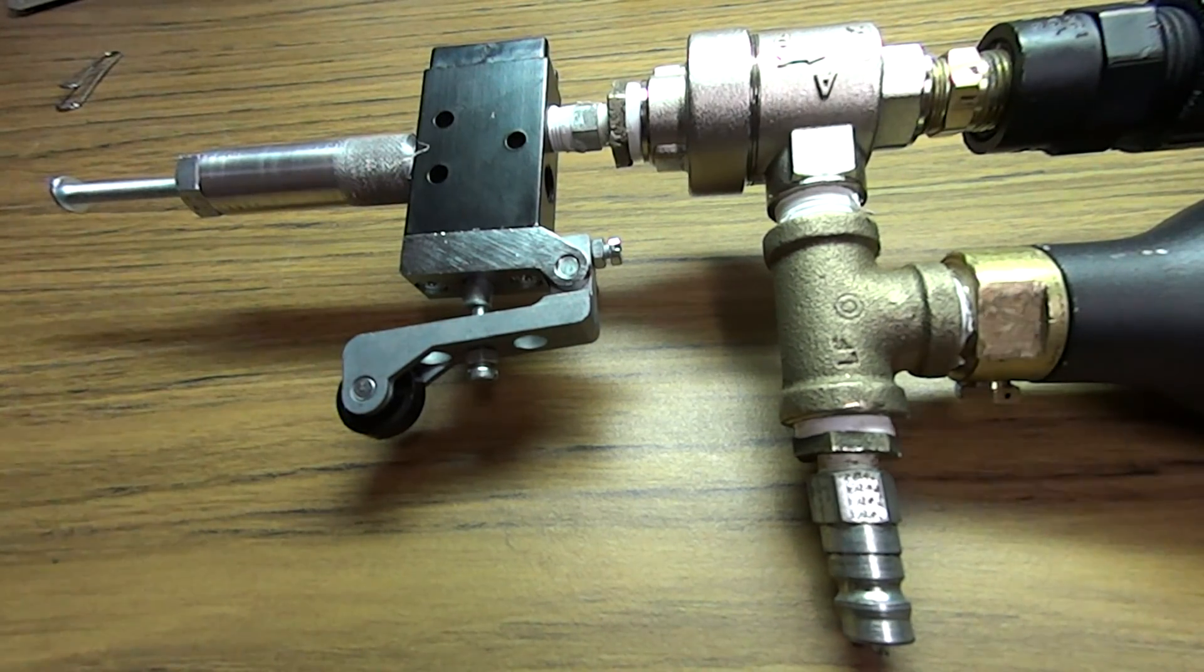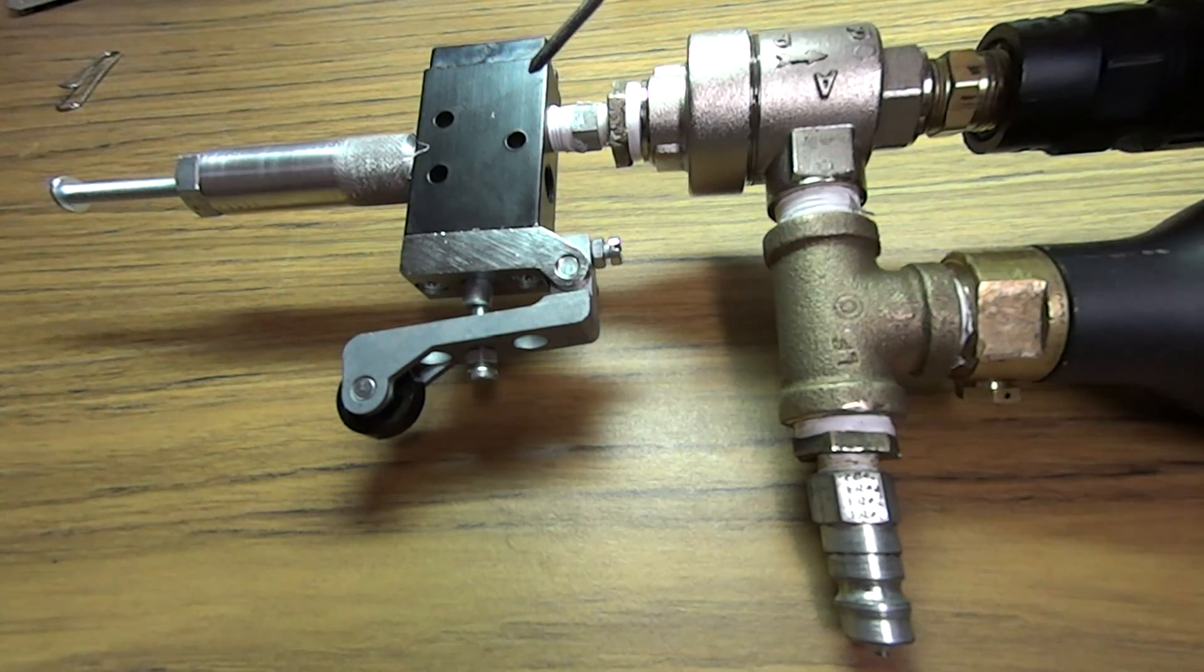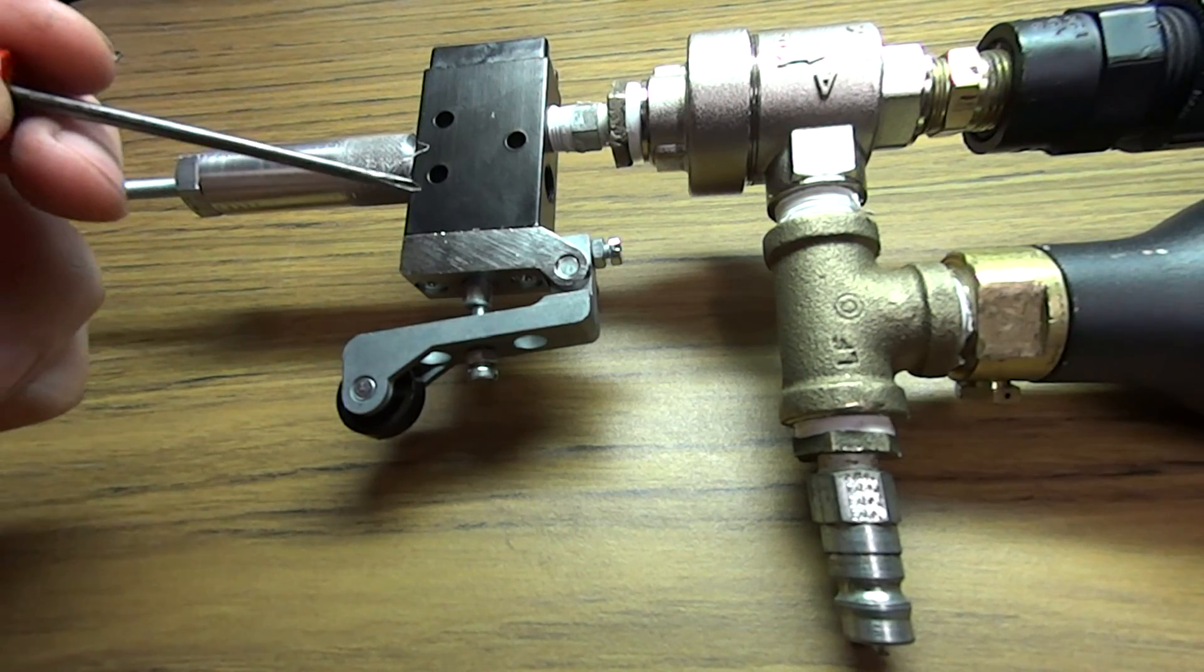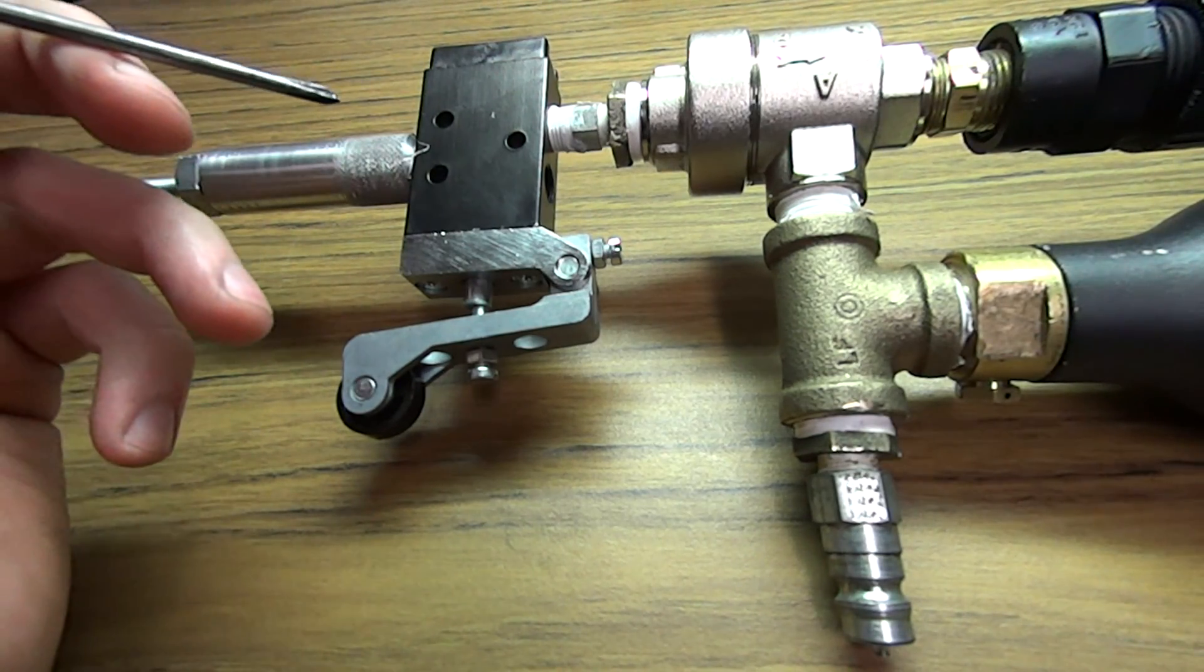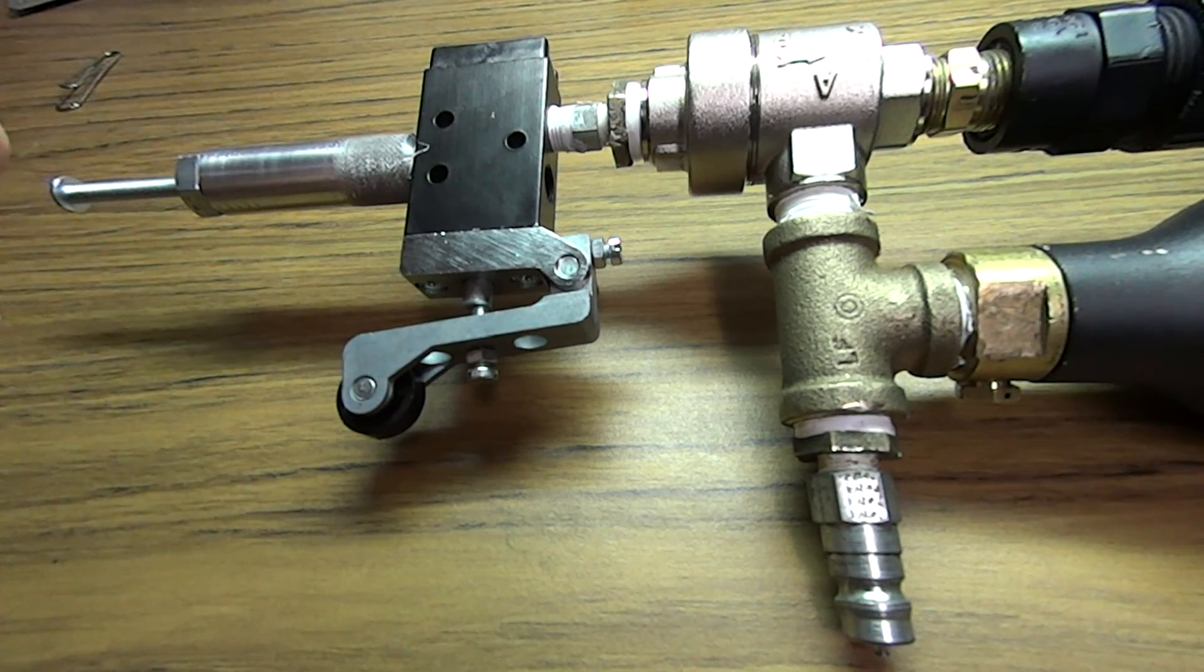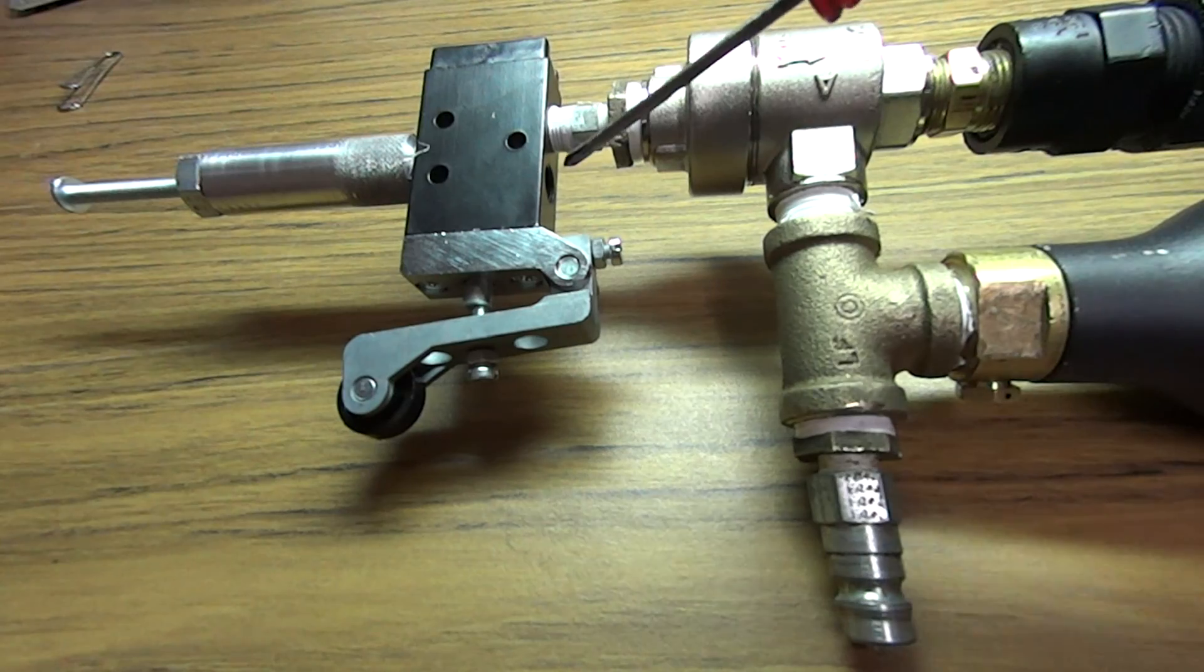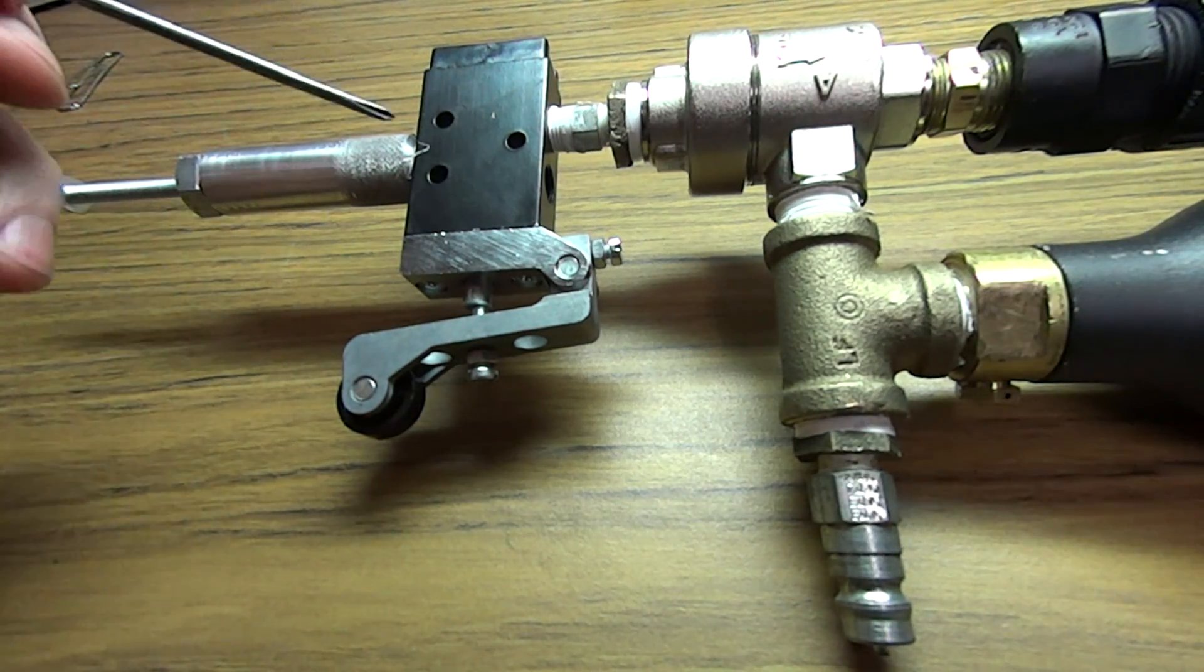So now I'll get on to the real good changes here. This black valve here is a one-eighth inch NPT three-way normally closed valve. How this works is there are three ports on it. There's one here, there's one here, and there's one back here.